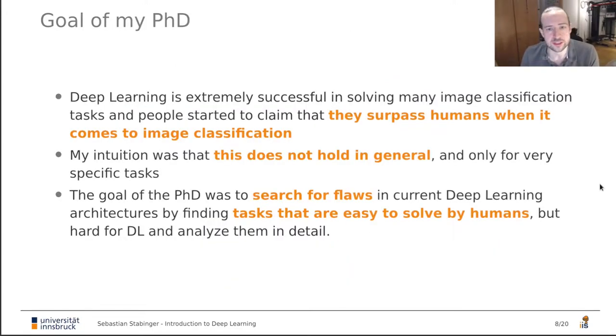So what was the goal of my PhD? Deep learning is actually extremely successful in solving many image classification tasks. And people actually started to claim that they generally surpass humans when it comes to image classification. My intuition was that this is actually not the case in general, but only for this very concrete classification task where you have to detect some concrete objects like cats and dogs or differentiating planes from cars and things like that. But you can come up with a lot of more abstract classification tasks that are also built on images. And my goal was to find or construct data sets that are easy to solve for humans, but that deep learning systems struggle with and to explain why this might be the case.